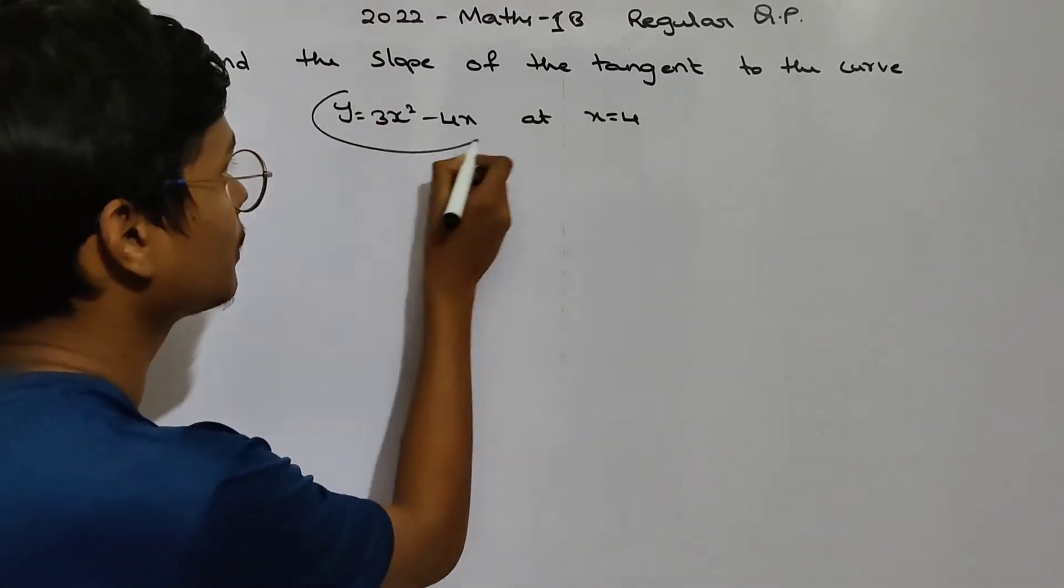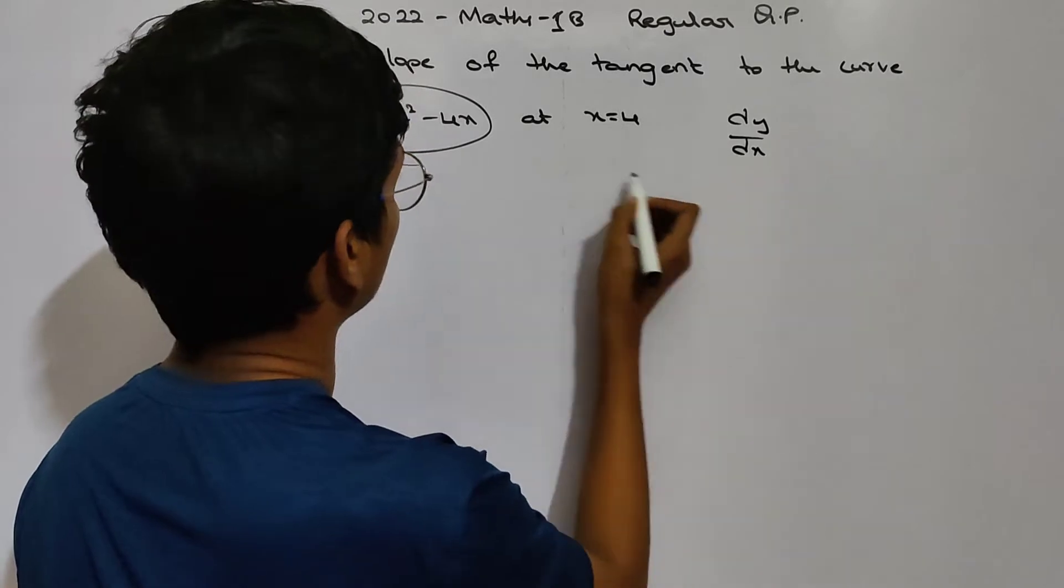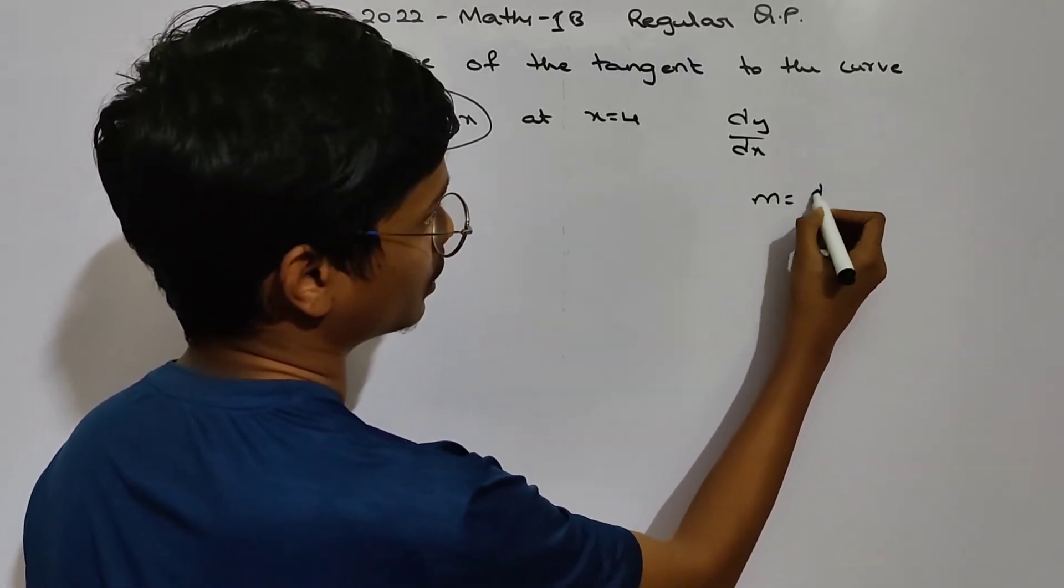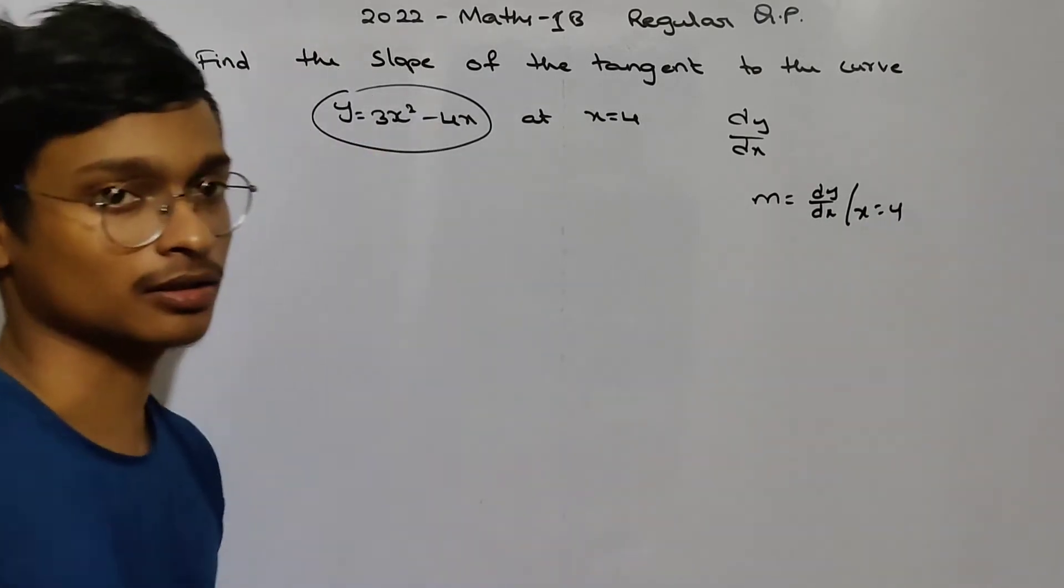We will find the function of dy by dx. The slope of the tangent is m equals to dy by dx at the rate x equals to 4. That is the answer.